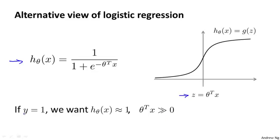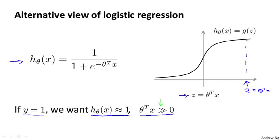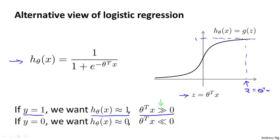Now let's think about what we would like logistic regression to do. If we have an example with y equals 1, we're hoping that h of x will be close to 1, meaning theta transpose x must be much larger than 0. That's because if z — that is theta transpose x — is much bigger than 0, the output of logistic regression becomes close to 1. Conversely, if y equals 0, we hope theta transpose x is much less than 0, corresponding to the hypothesis outputting a value close to 0.